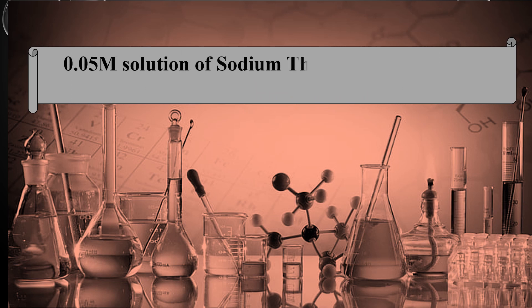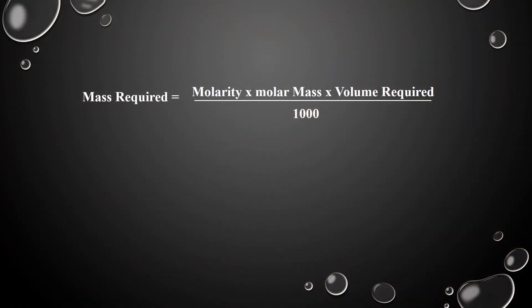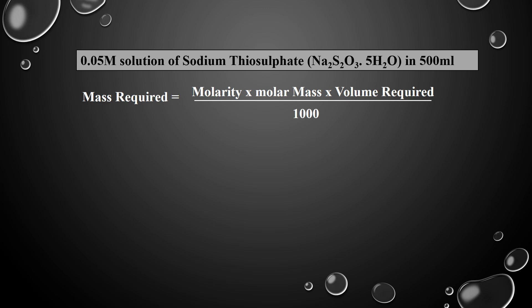Let's prepare 0.05 molar solution of sodium thiosulfate in 500 mL using animation. For the calculation: put 0.05 in molarity, 248.2 in molar mass, and 500 in volume required. Divide the answer by 1000 mL — we get required mass 6.21 grams.